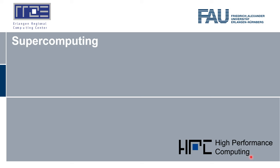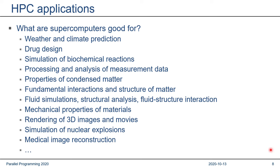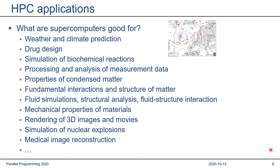There might be some prior knowledge among you about supercomputing and its applications, but I would like to give a short survey — necessarily incomplete — about the applications that supercomputers are used for. First of all, one thing that everybody knows is weather and climate prediction. There's a huge amount of computing power used every day to compute tomorrow's weather, and it's pretty successful.